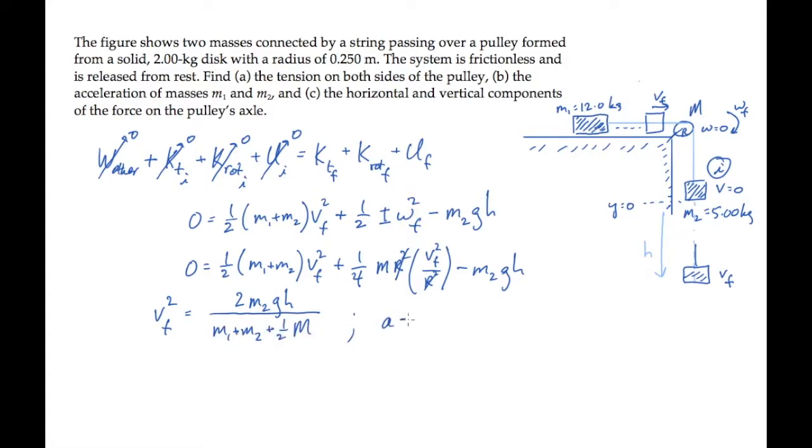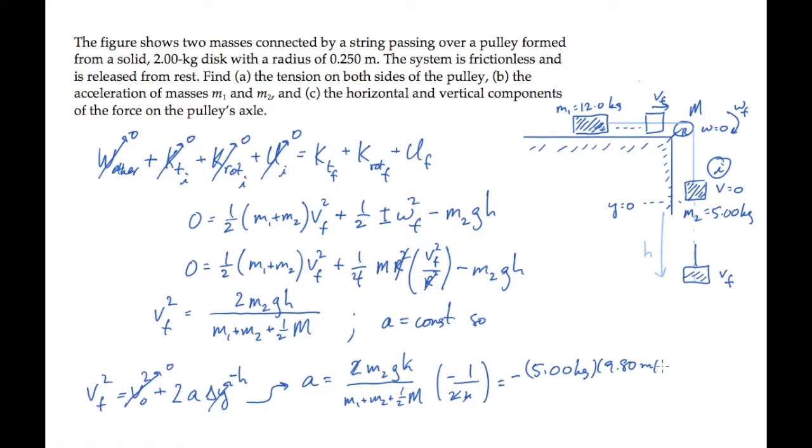The acceleration is constant, so we can now find it using the time-independent kinematic equation shown here. Mass 2 starts from rest and descends a distance h. Solving for the acceleration a gives us this expression. Substituting numbers and calculating gives us an acceleration of minus 2.72 meters per second squared. The negative telling us that mass 2 accelerates down.